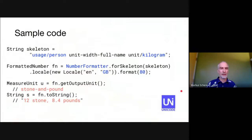This is an example of formatting a person's weight — that is, a number with a measurement unit. The input is given in kilograms, and a formatter is set up for the person weight usage for British English. The output is in stone and pounds, appropriate for this configuration, and with the correct decimal digits and decimal separator.